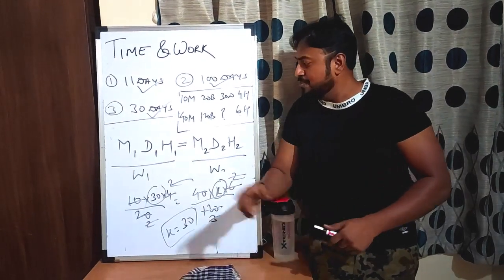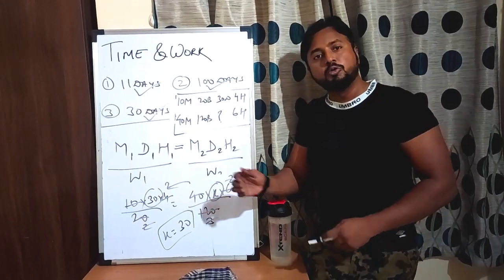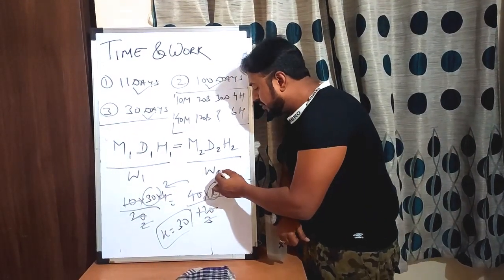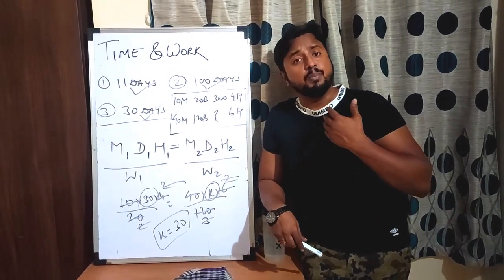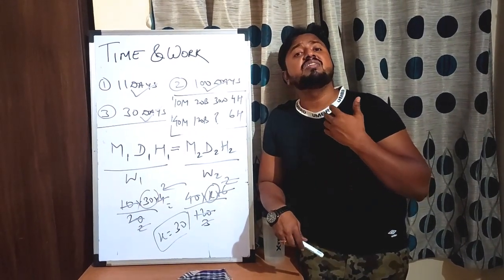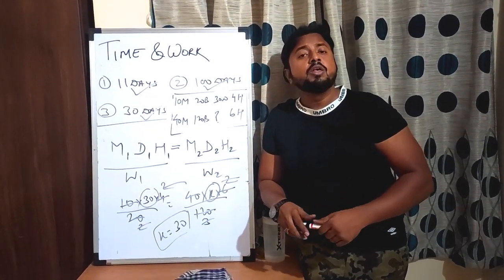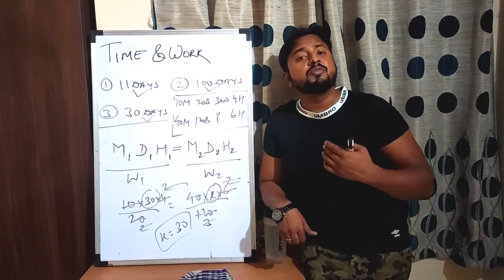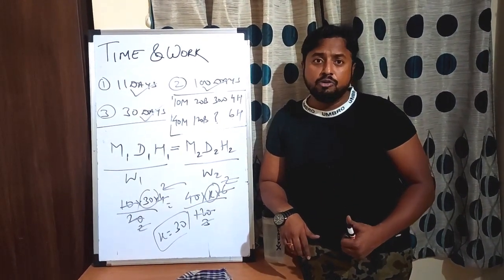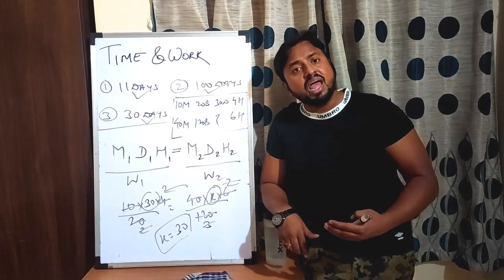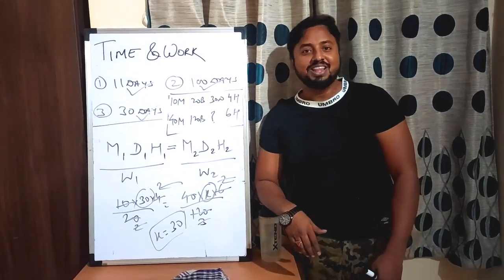So guys, I hope you understand. The formula M1 × D1 × H1 ÷ W1 = M2 × D2 × H2 ÷ W2 can be used to solve any such question. I have not just given you the formula directly — I wanted your base to be strong so you can understand logically and also explain to others. I hope you enjoyed this video. Please like my video and subscribe to my channel so you can get more videos. Thank you very much — I'll come with another video. Love you all. Thank you.